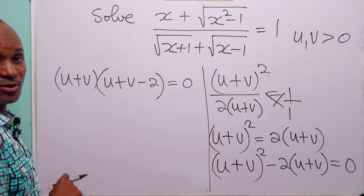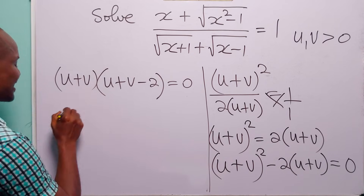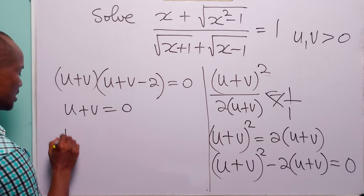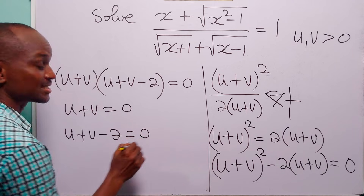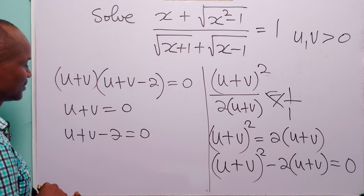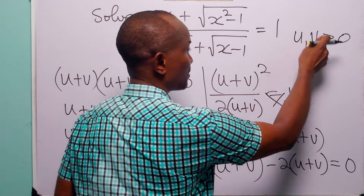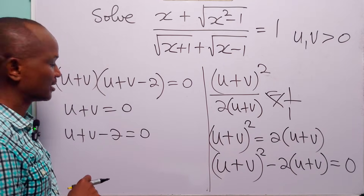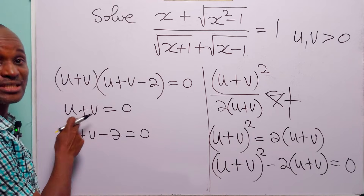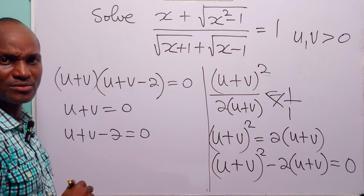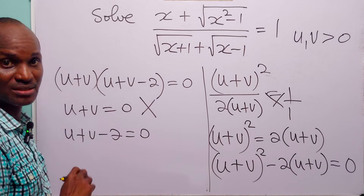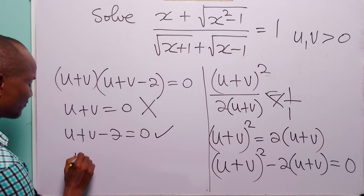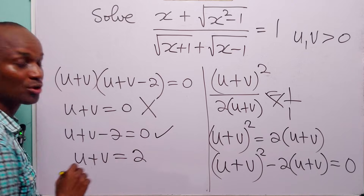This means either u plus v is equal to 0, or u plus v minus 2 is equal to 0. But remember, both u and v are greater than 0, so there is no way the sum of two positive numbers equals 0. That case is impossible, so we are left with u plus v is equal to 2.